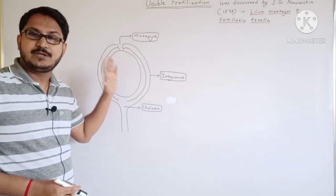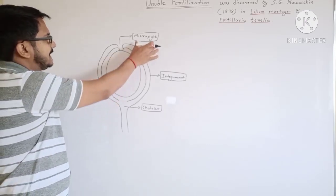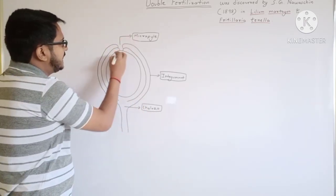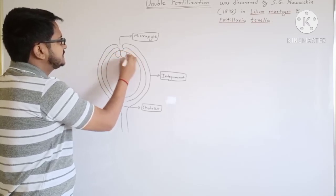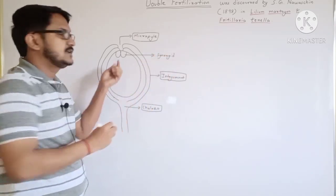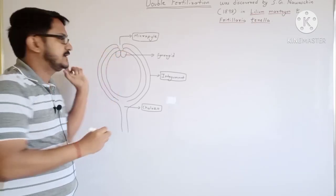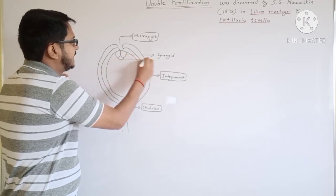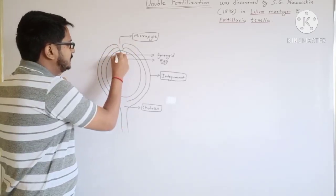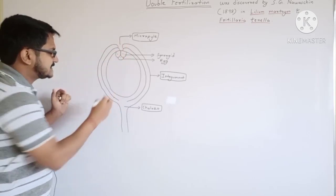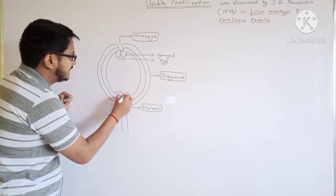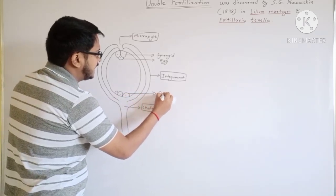Before that, we need to learn about the structure of the ovule, that is the embryo sac. Here we have the micropylar end, the integuments, and the chalazal end. At the micropylar end, I have two cells termed as synergids, and one cell known as the egg — so total three cells are present at the micropylar end. At the chalazal end, there are again three cells termed as antipodal cells.